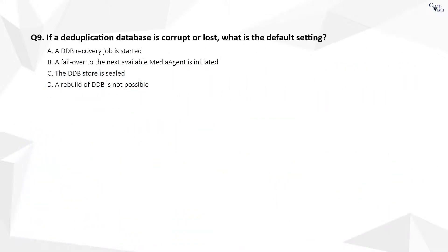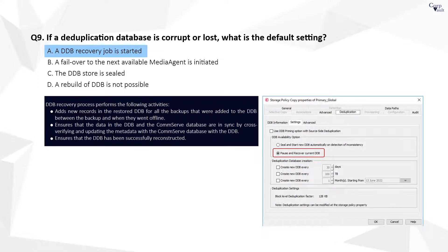Question 9. The correct answer is A. When the deduplication database, or partition of the DDB, is detected as offline, unreadable, or unavailable, the DDB is automatically recovered from the latest DDB backup. This is the default recovery setting.